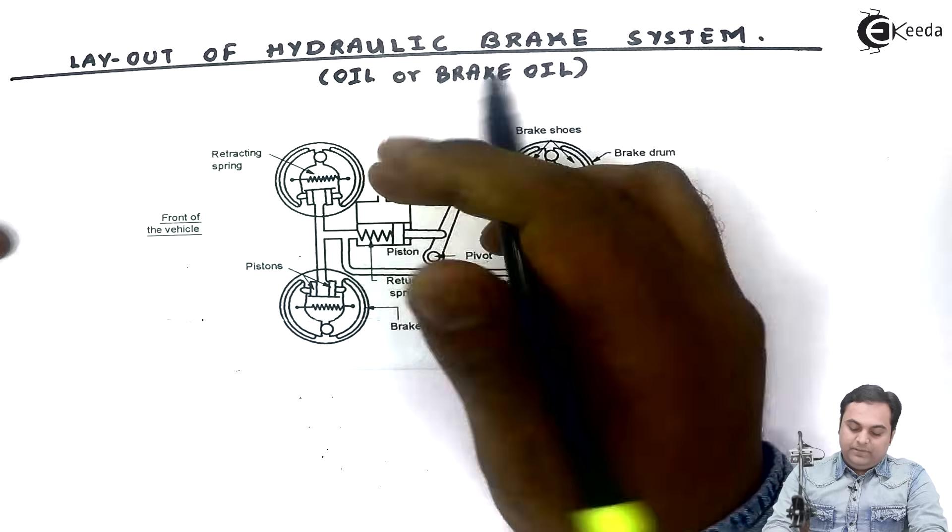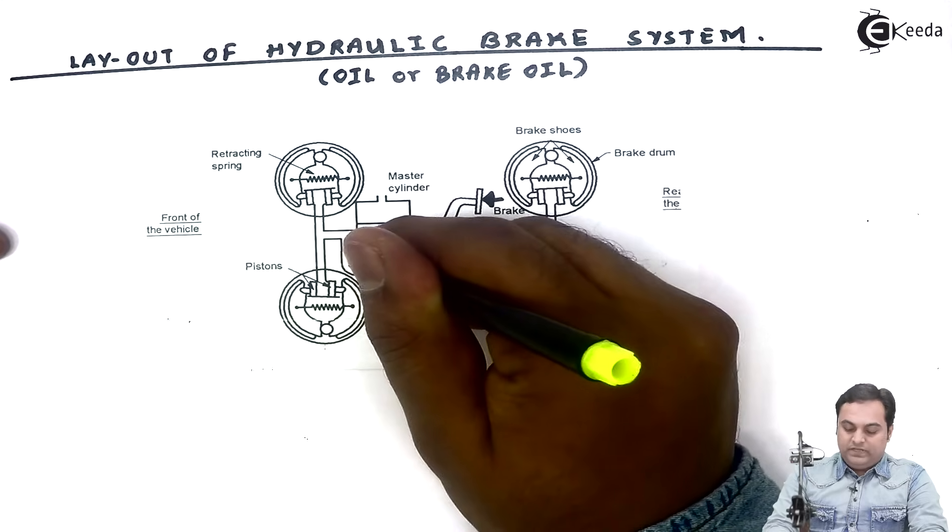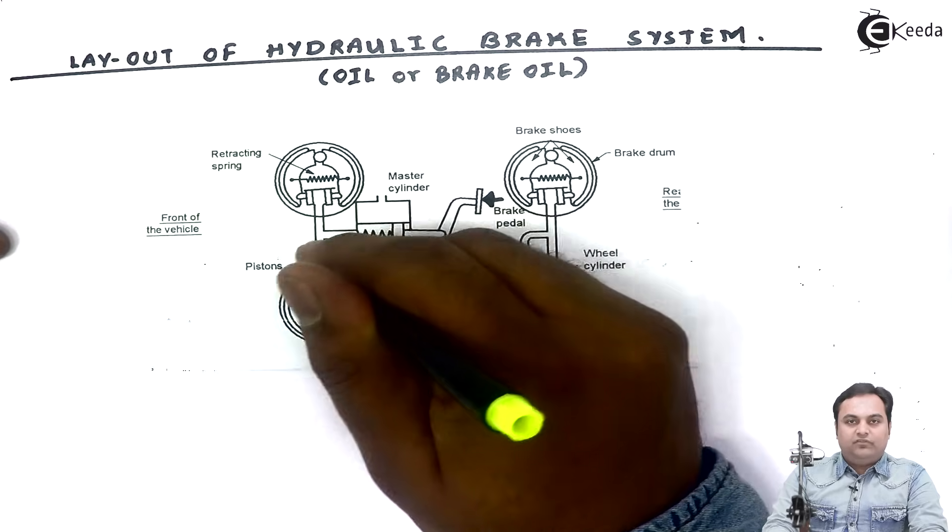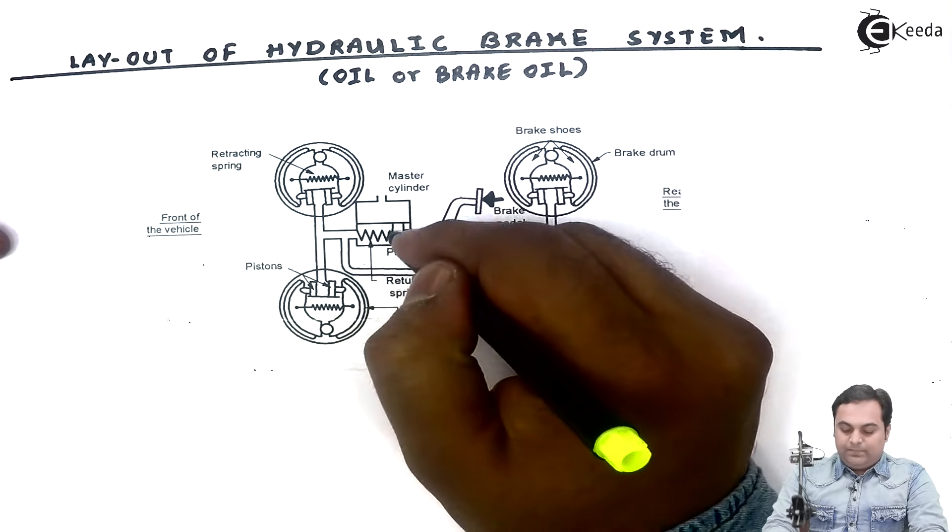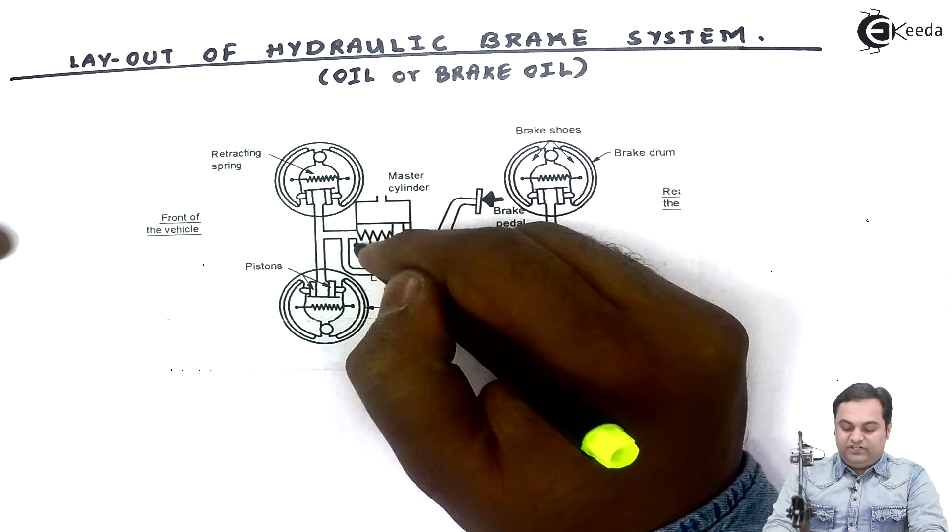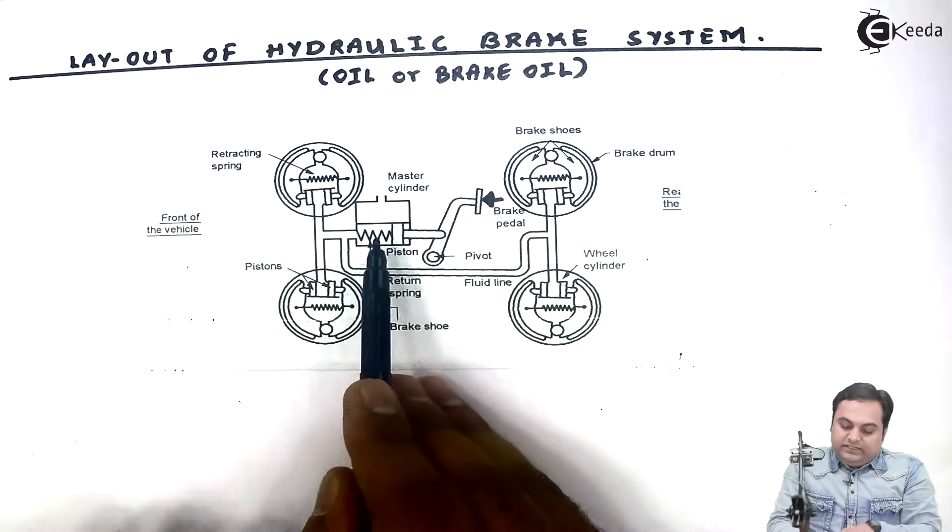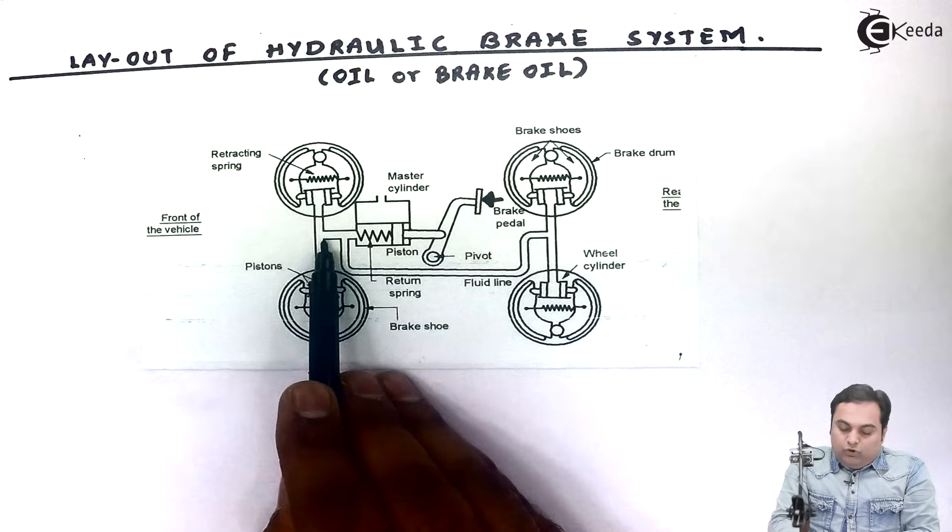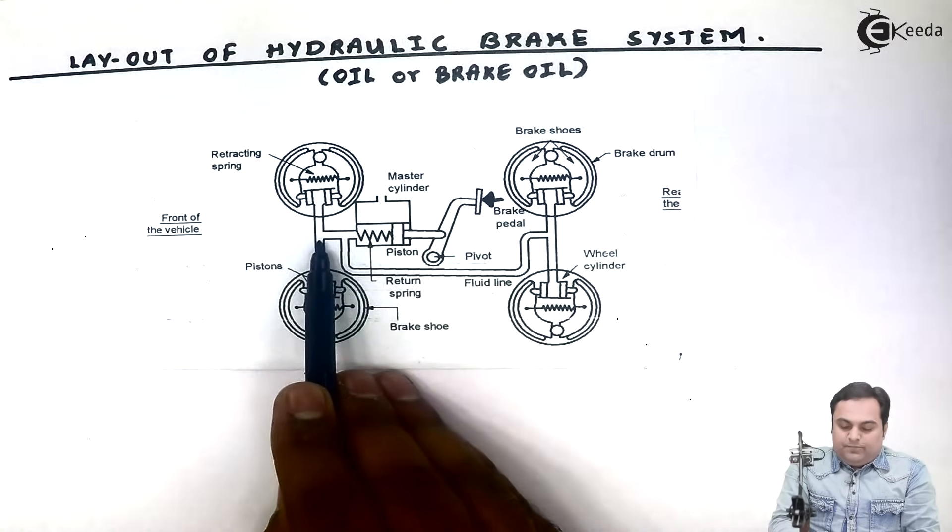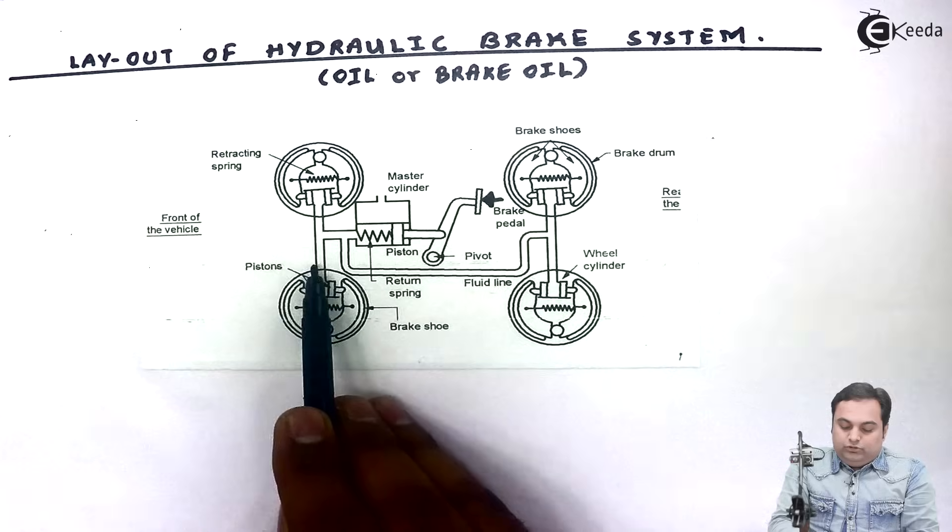When we press the brake pedal through the linkage and the pivot, the brake pedal moves the piston in the forward direction. When the piston moves forward, it compresses the brake oil which is filled in the master cylinder. The pressure of the oil rises, and that high pressure oil goes into the channels which are provided. It goes into the two front wheels and the two rear wheels.